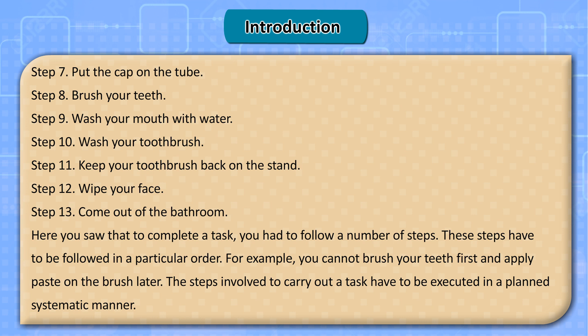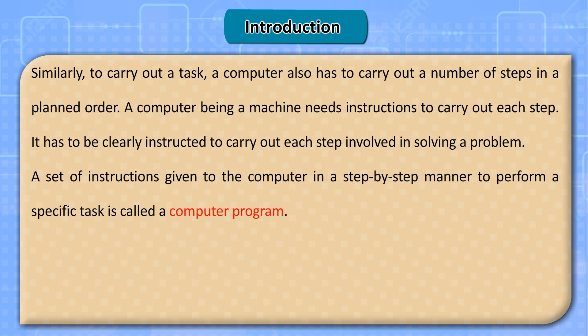To complete a task, you had to follow a number of steps in a particular order. For example, you cannot brush your teeth first and apply paste on the brush later. The steps involved must be executed in a planned, systematic manner. Similarly, a computer also has to carry out a number of steps in a planned order. Being a machine, it needs to be clearly instructed to carry out each step involved in solving a problem. A set of instructions given to the computer in a step-by-step manner to perform a specific task is called a computer program.